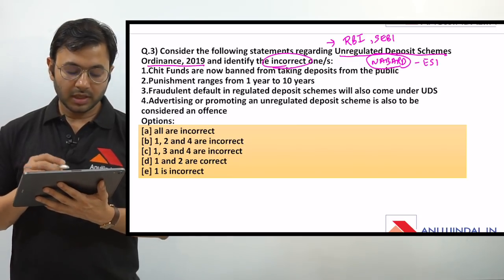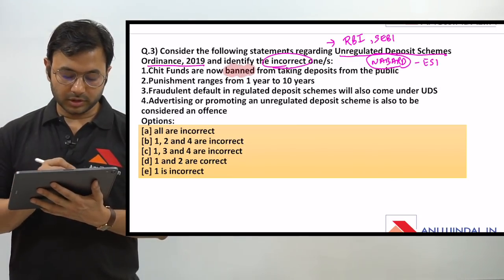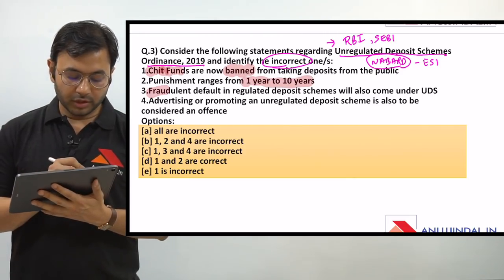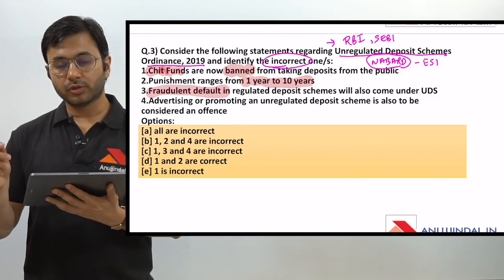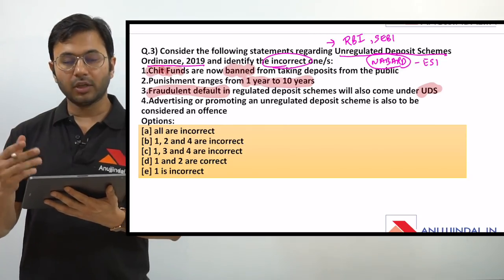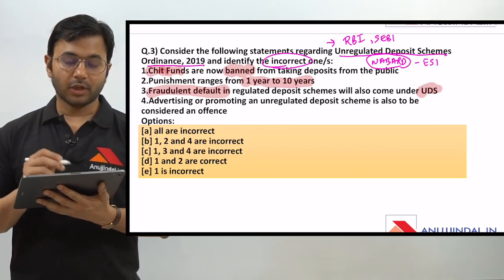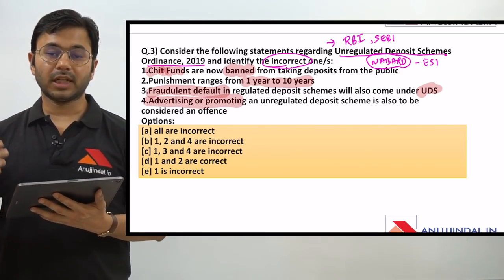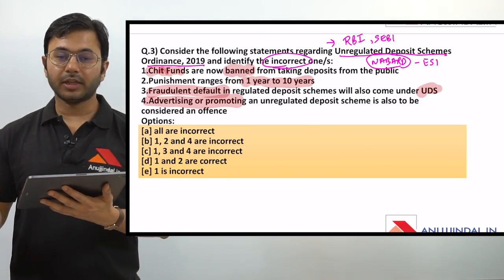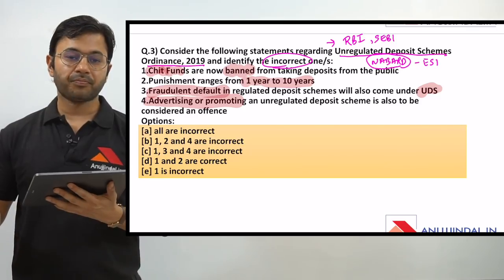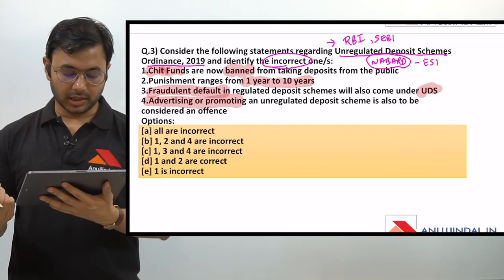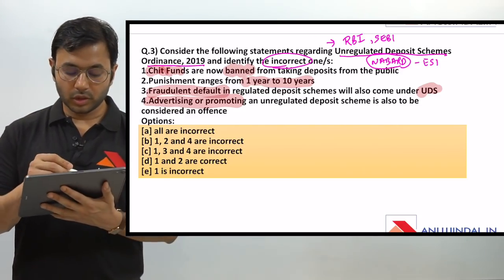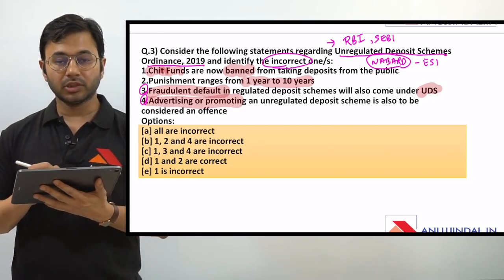We have to find out the incorrect one. The options are: chit funds are now banned from taking deposits from the public; punishment ranges from 1 year to 10 years; fraudulent default in regulated deposit schemes will also come under UDS - unregulated banning of unregulated deposit schemes; and advertising or promoting an unregulated deposit scheme is also to be considered an offense. There are three offenses: fraudulent default in regulated deposit schemes, advertising or promoting an unregulated deposit scheme, and running an unregulated deposit scheme.